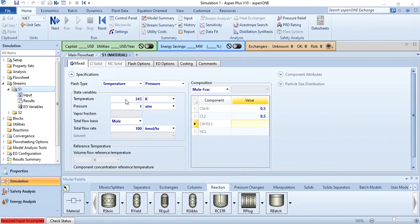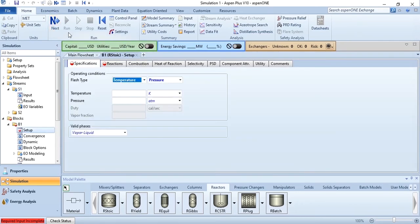Click on S1 and specify the feed conditions. First change the unit to MET because the information given is in Kelvin and atm. You can see the information is added: temperature 343 Kelvin, pressure 1 atm, flow rate in mole which is 100 kmol per hour, mole fraction for benzene and chlorine is 0.5, 0.5 each. Click on next, specify 343 Kelvin and 1 atm pressure.